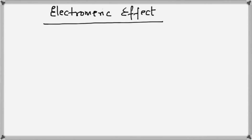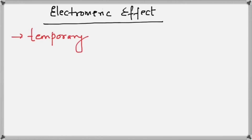Hi guys, in the previous video we talked about the inductive effect. Let's now talk about the second electronic effect in organic chemistry, and that is the electromeric effect. The first important point about this effect is that it is temporary, which means it is observed only during reactions.